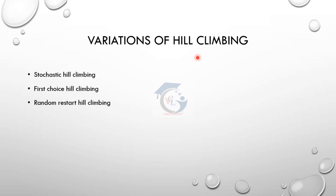Variations of hill climbing — types of hill climbing: Stochastic hill climbing, First Choice hill climbing, and Random Restart hill climbing. In Stochastic hill climbing, we add a random node. Among neighbor nodes, if the cost of the node is better than the current node, we effectively finalize and reach the goal node.